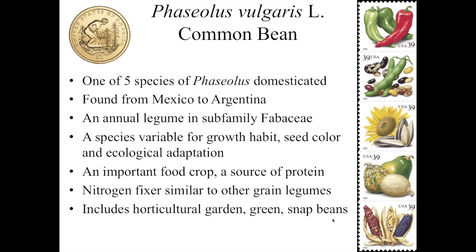Phaseolus vulgaris, the common bean, was featured by the U.S. Postal Service in 2006 among their stamp collection of Crops of America. Beans are listed alongside their two sister crops, corn and squash — some of the traditional crops of America, part of the rather famous milpa production system. Beans are also featured on the back of the one-dollar Native American coin in 2009, where corn, squash, and beans are all depicted being planted, showing they've been very much a part of the culture of the Americas.